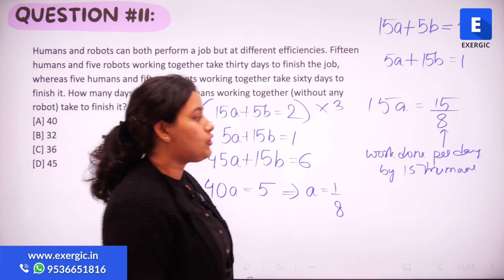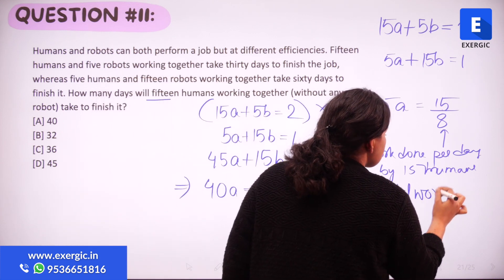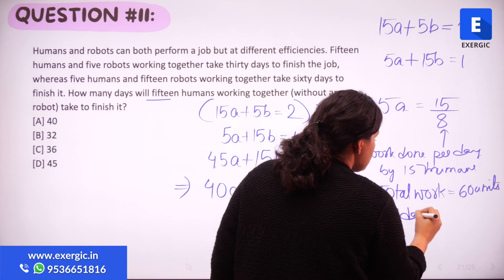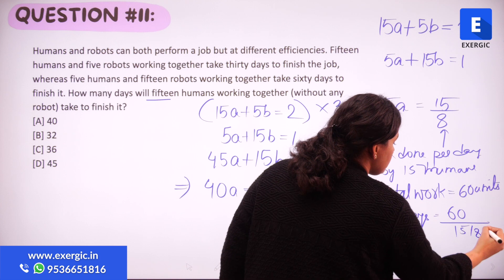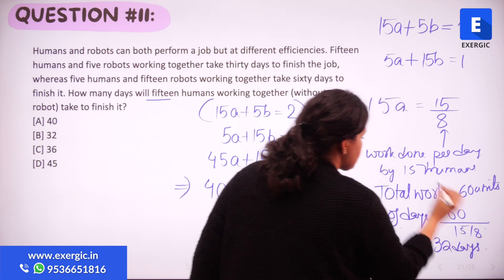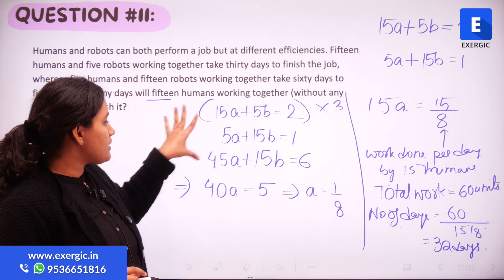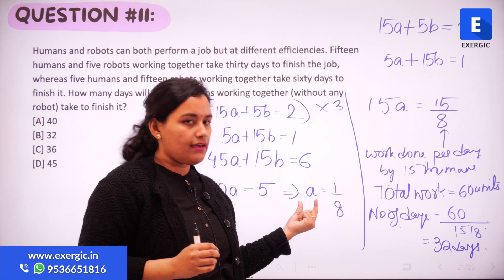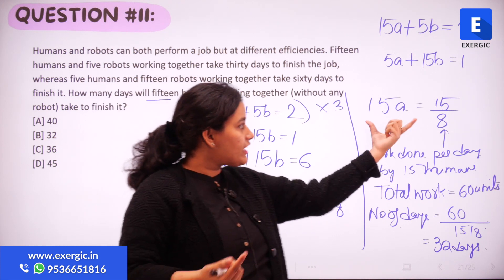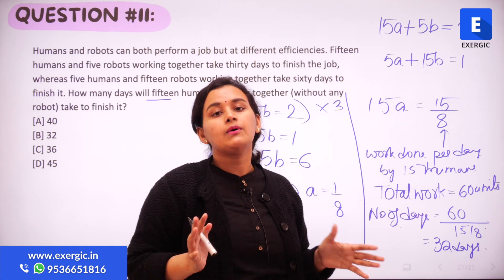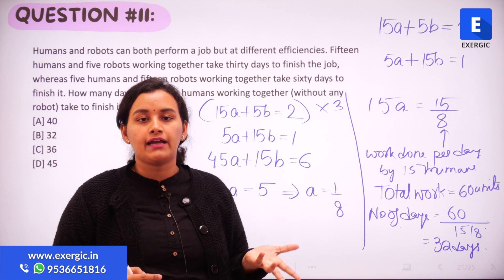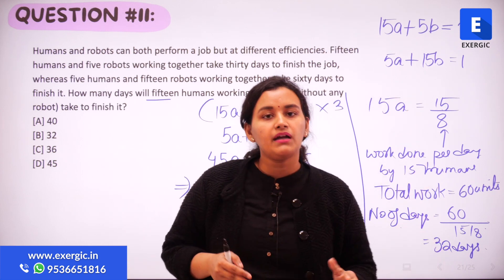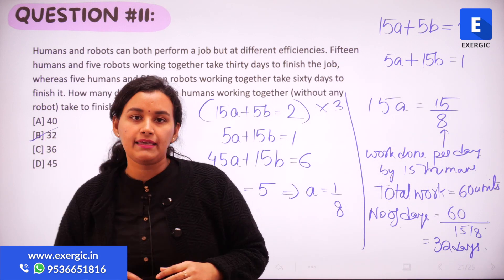The total work to be done is 60 units. The number of days is 60 divided by 15/8, which equals 32 days. A is one human's one day's work, so 15 humans' one day's work is 15/8, and dividing 60 units by 15/8 gives 32. So the answer is option B, that is 32.